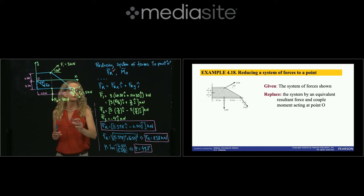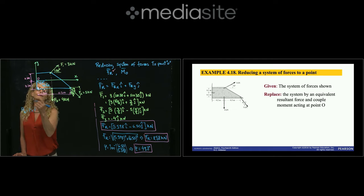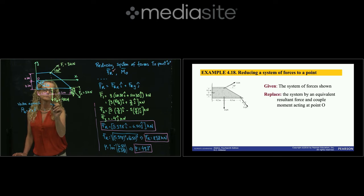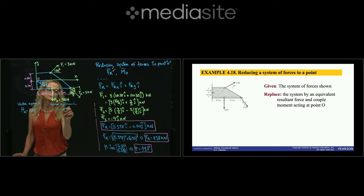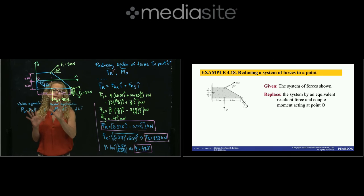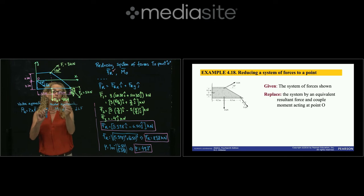Now let's find the moment. The moment equals r cross F in the vector approach, or distance times force (with the distance perpendicular to the force) in the scalar approach. Since this is a 2D problem, I'll use the scalar approach, and determine the sign — positive or negative — using the right-hand rule: counterclockwise is positive, clockwise is negative.